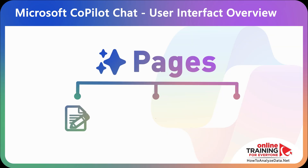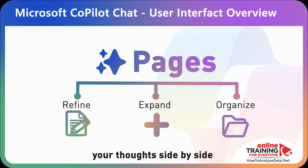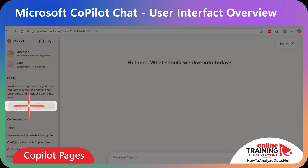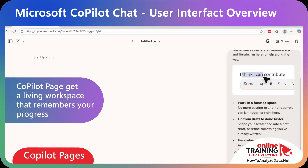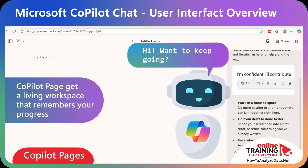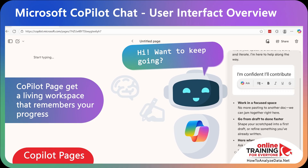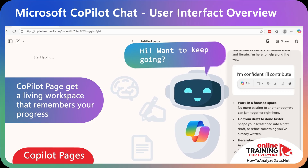Copilot has an amazingly cool feature called Pages, where you can refine, expand, and organize your thoughts side by side. You create a new page on the sidebar by clicking 'Create a page.' A Copilot page gives you a living workspace where it remembers your progress. Instead of starting over with every new prompt, a page lets you expand all your ideas, edits, and context together so you can build step by step.